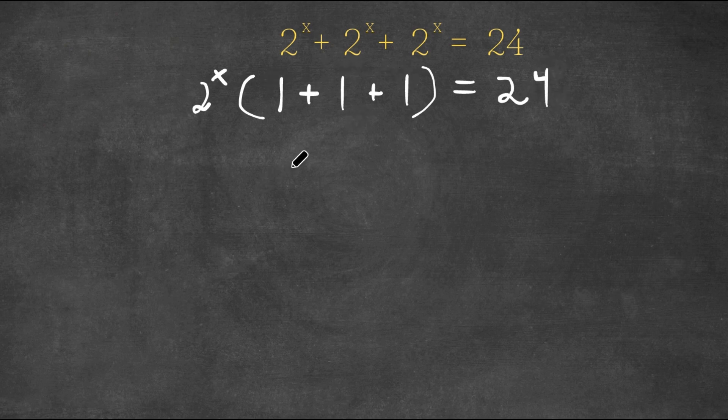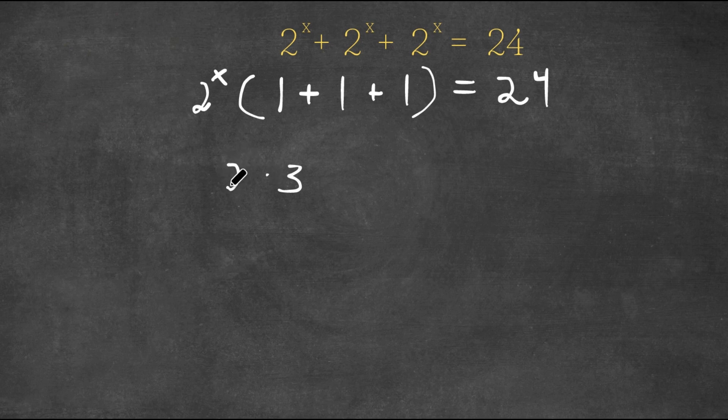Now 1 plus 1 plus 1 is 3. So I have 3 times 2 to the power of x is equal to 24.